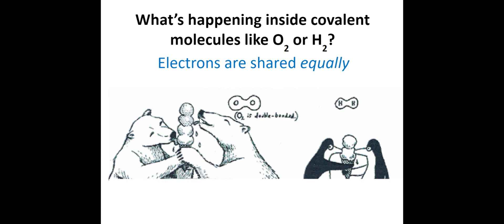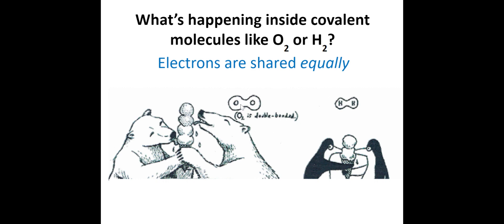The number of scoops of ice cream in the cone represents the number of electrons being shared in the bond. We know from our Lewis dot structures that oxygen has a double bond - each bond has two electrons, and since there's a double bond we have four electrons, represented by the four scoops of ice cream. Since the two polar bears are equal in strength, they're sharing the ice cream cone with four scoops equally. Both oxygen atoms have the same electronegativity, so there's no difference in electronegativity between them.